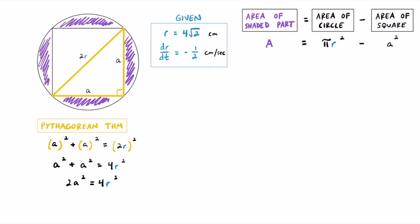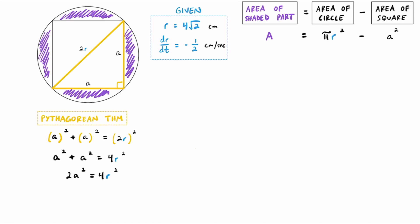Now let's isolate a² by dividing both sides by 2. That gives us a² equals 2r². Notice that a² represents the area of the square, so we can use 2r² as an equivalent value for a squared — allowing us to substitute and work with just r.